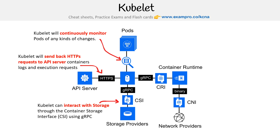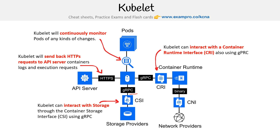For storage, kubelet can interact with storage through the Container Storage Interface (CSI) using gRPC. Very few diagrams actually show off the Container Storage Interface, Container Runtime Interface, and Container Networking Interface. This diagram shows those integrations, and notice it's communicating using gRPC. Kubelet can also interact with the Container Runtime Interface using gRPC. The Container Networking Interface is shown here just to clarify that it's not kubelet — it's simply another route into the container runtime.